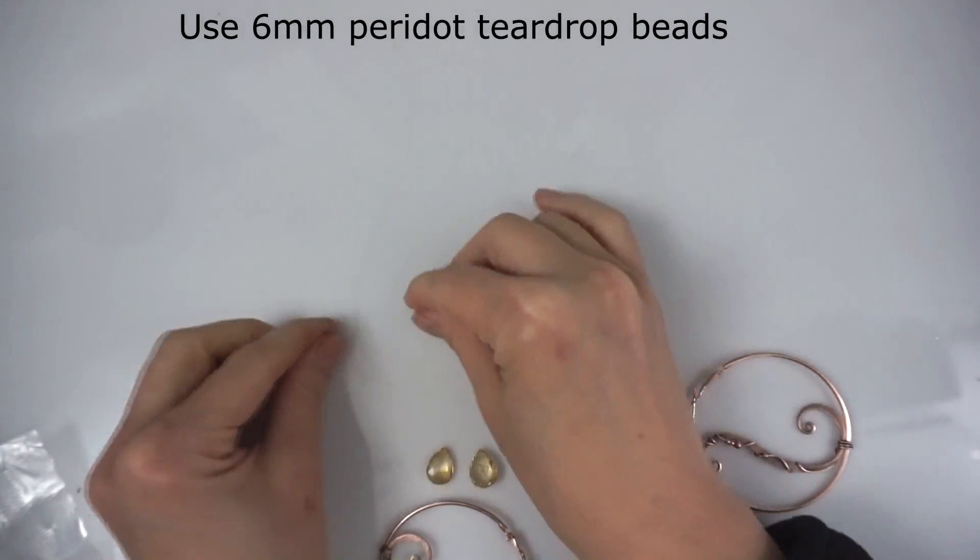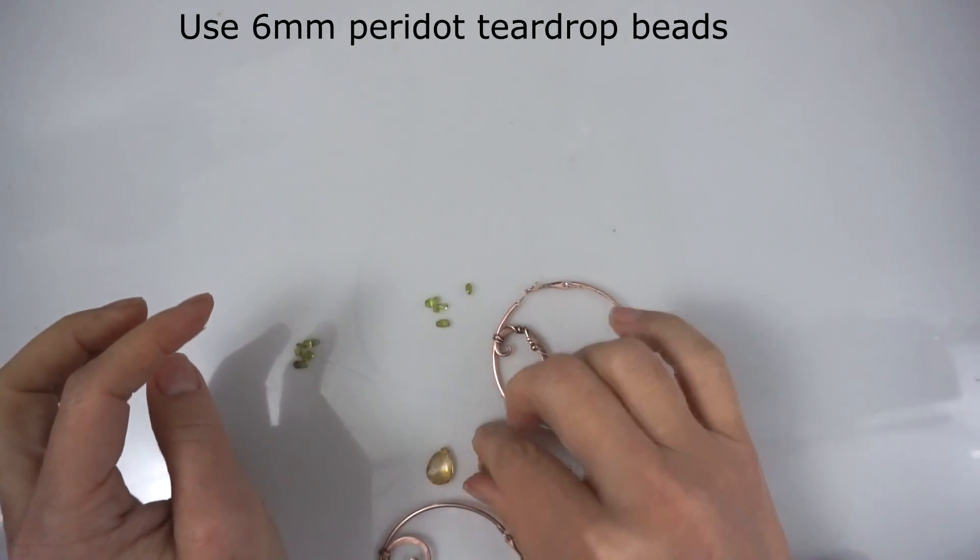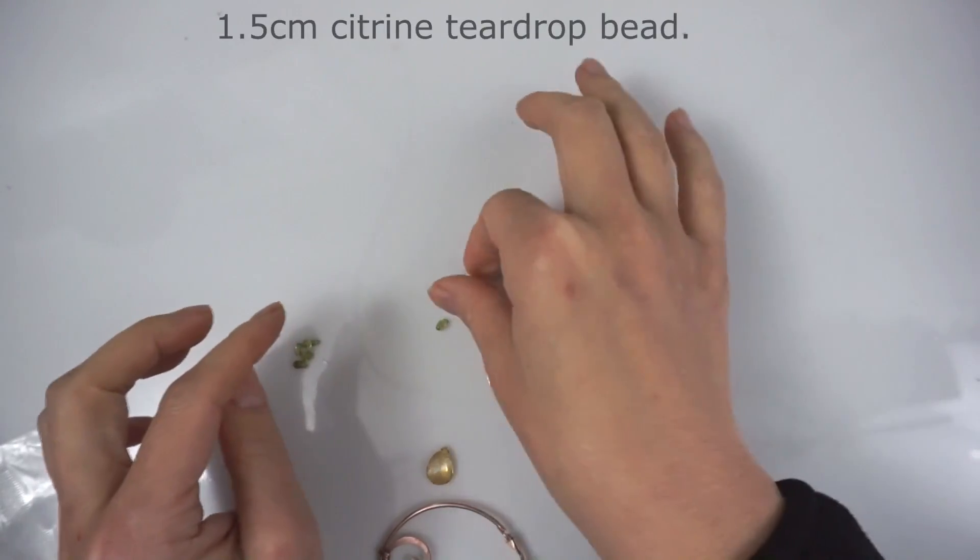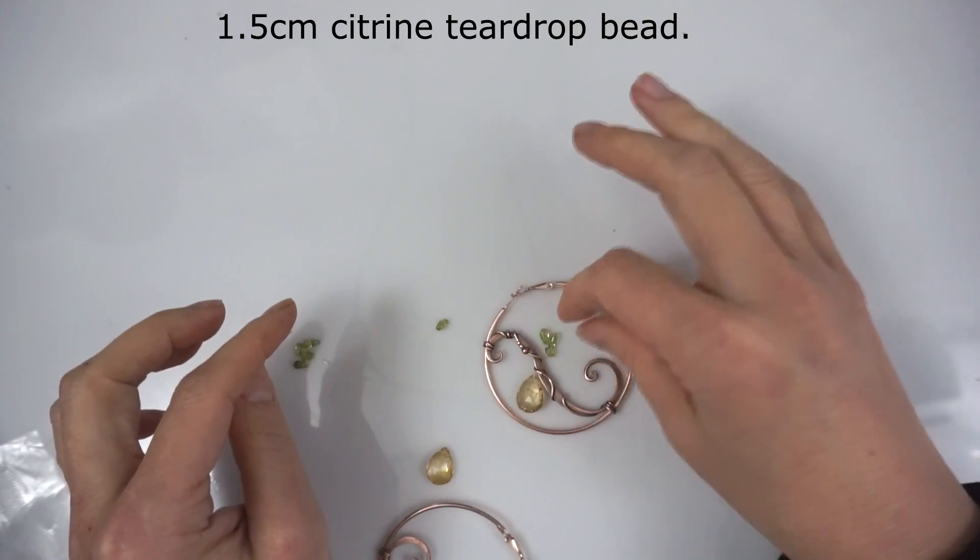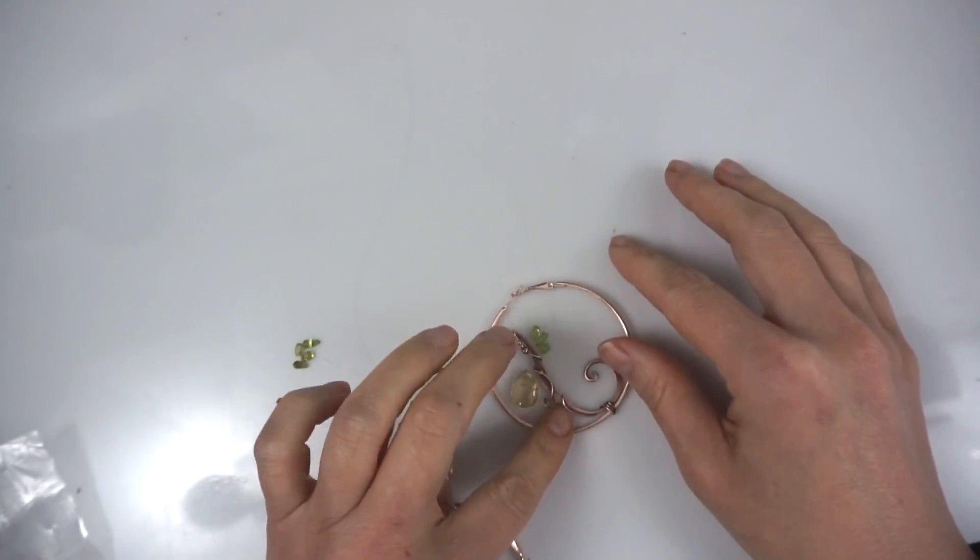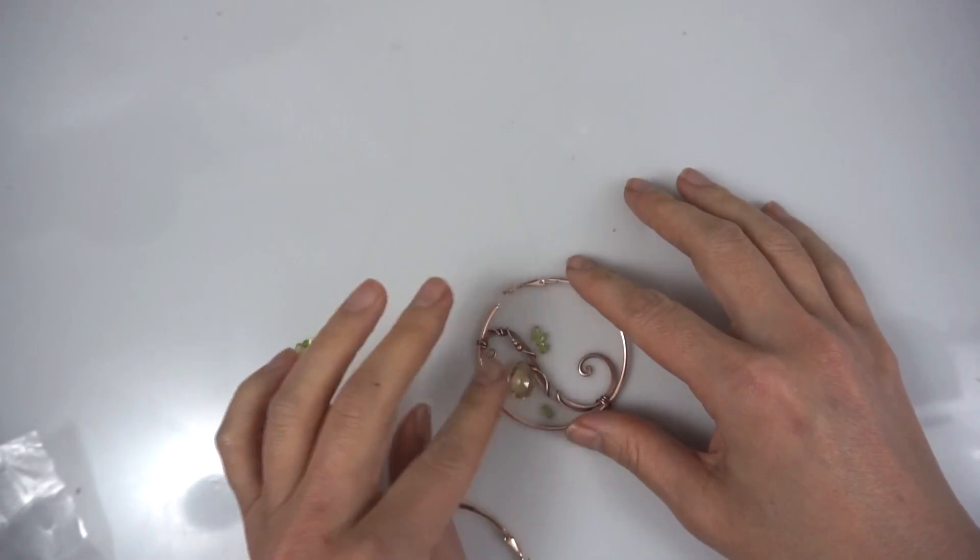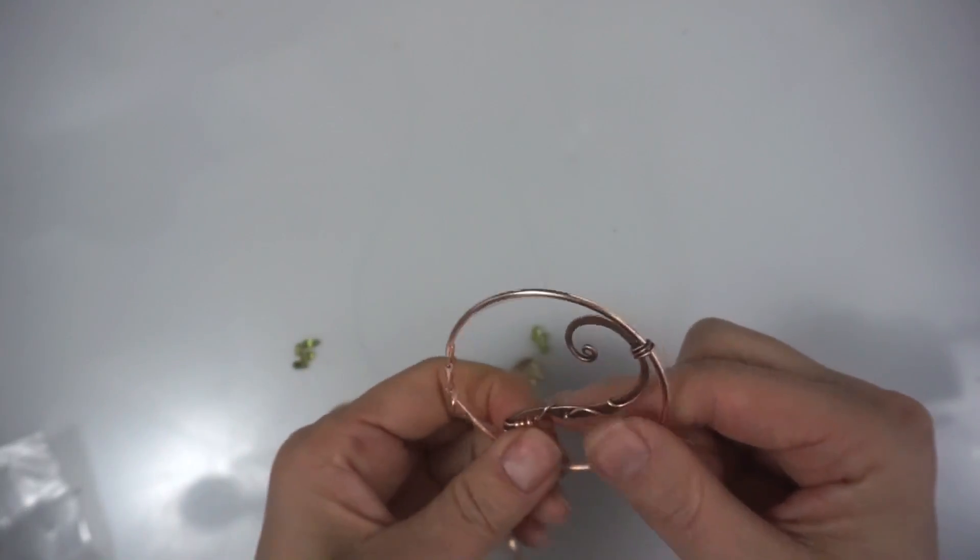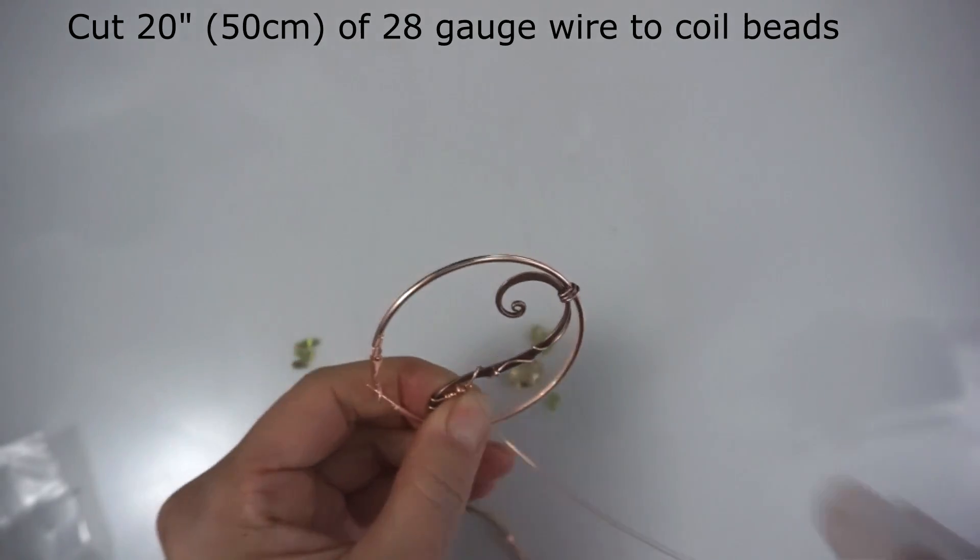And now time to play with your beads - this is my favorite time. I decided to use my citrine bead and my small peridot one. I just lay them down and visually see how I want to connect them. I use 28 gauge wire to connect them.